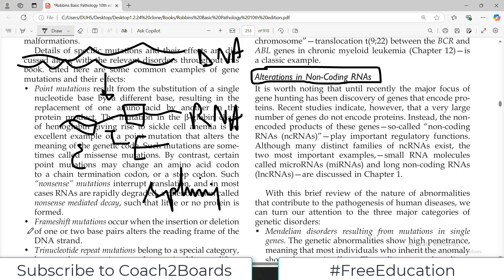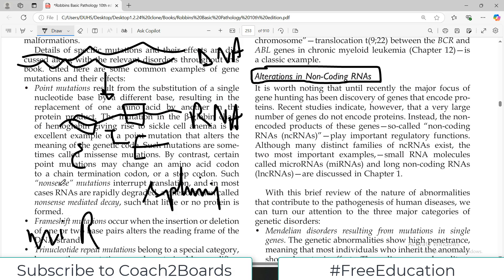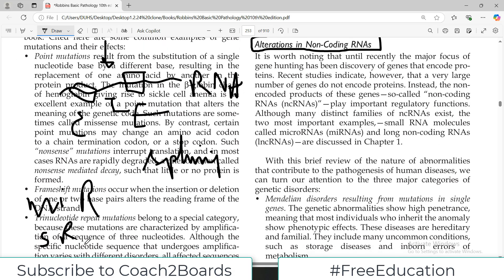For example, we have micro RNAs which are present in the non-coding region. We have small RNAs, we have silencing RNAs. What they do by and large is that they control the expression or they control the normal functioning of the coding region. So non-coding region basically controls the function of coding region.